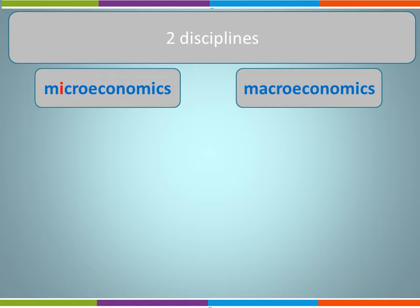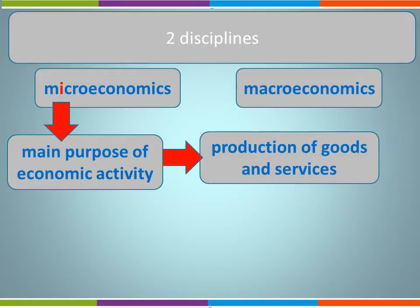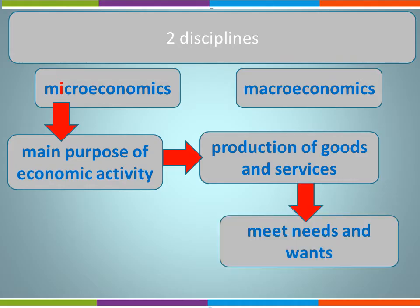Microeconomics is the study of economics on a small scale. It looks at the impact on and the decisions made by individual economic agents — for example, the firm. It considers the main purpose of economic activity, which is the production of goods and services. The resources used to produce goods and services are finite, whereas the needs and wants of the consumer are infinite. This creates the problem of scarcity.